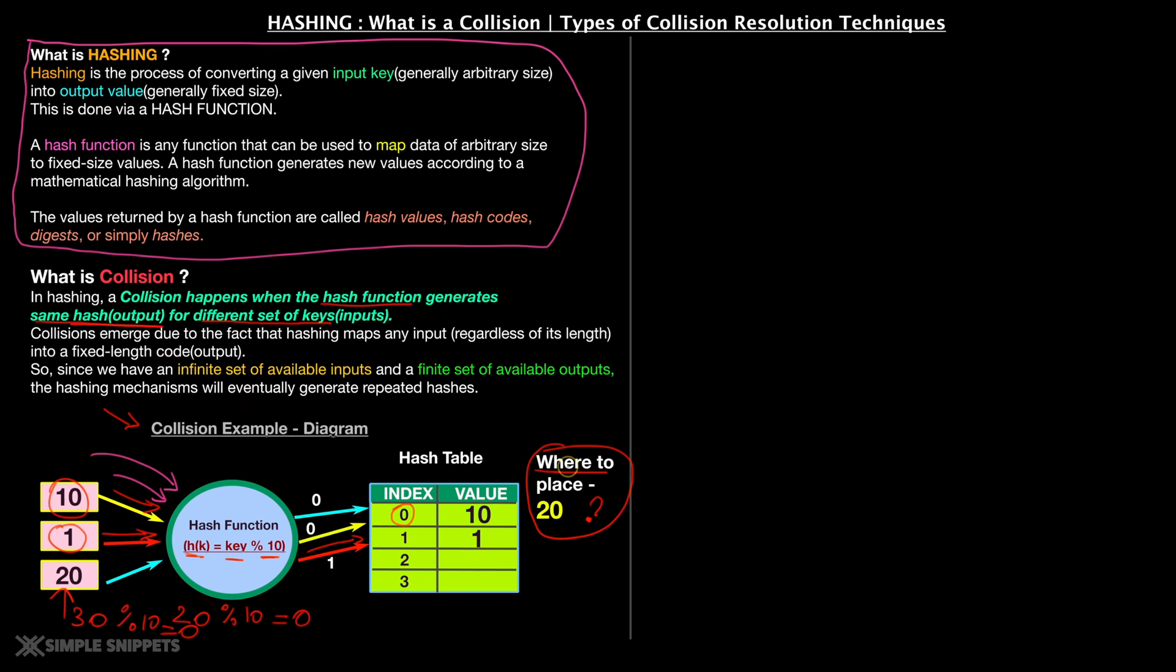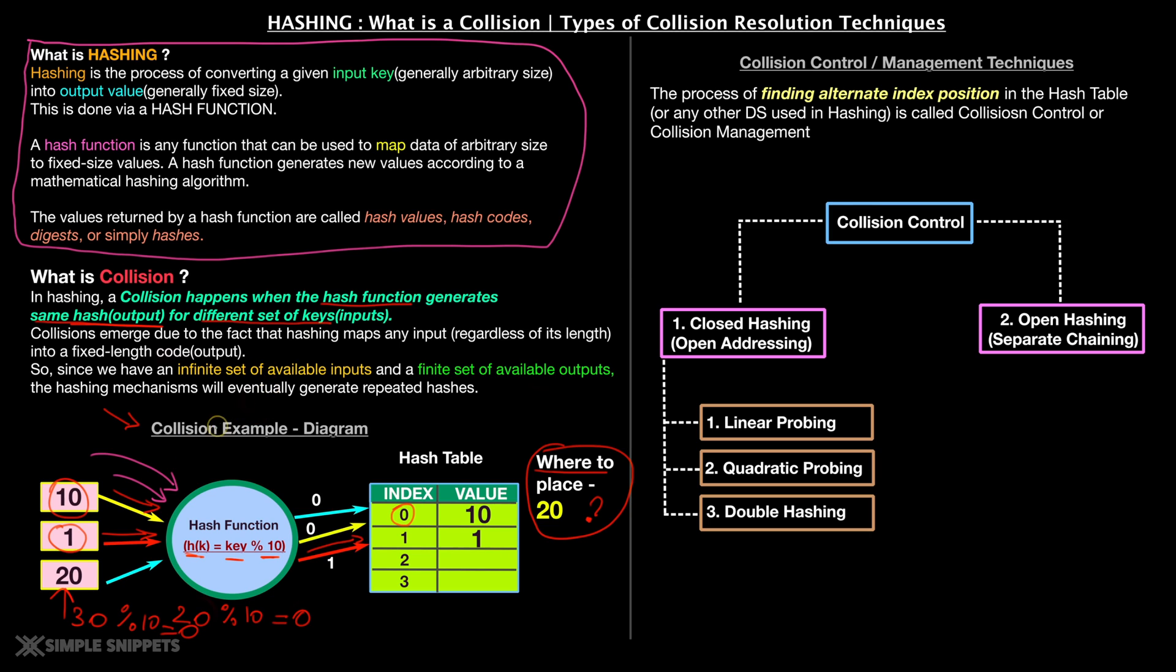And now the real question, where to place this key when you already have one key placed at that same index position, is where the collision resolution comes into picture. Now we know that collision has already happened, so now we need some solution, right? So this is where collision resolution concept comes into picture. So now that you have understood what is a collision, let's take a look at what is collision control or collision management techniques. Or what exactly is collision control?